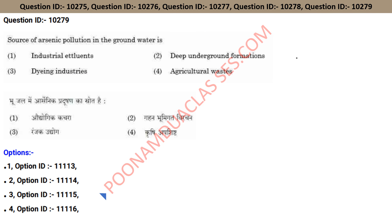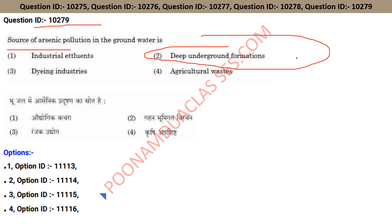We have reached question ID 10275 on line source of arsenic pollution in underground water. The correct answer is deep underground formations — option two is the right answer.